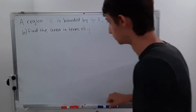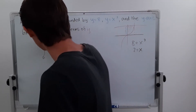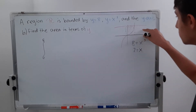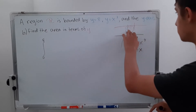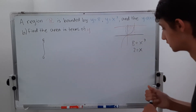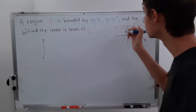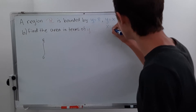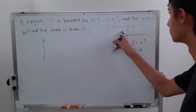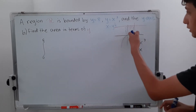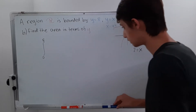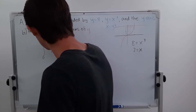Now we need to find this area. We're working with y's, so we need to convert that equation into an x equation. We have x equals y to the 1/3. We're subtracting 0 because it's just this area — we're not doing one minus the other. So all we have to do is put in y to the 1/3 dy.